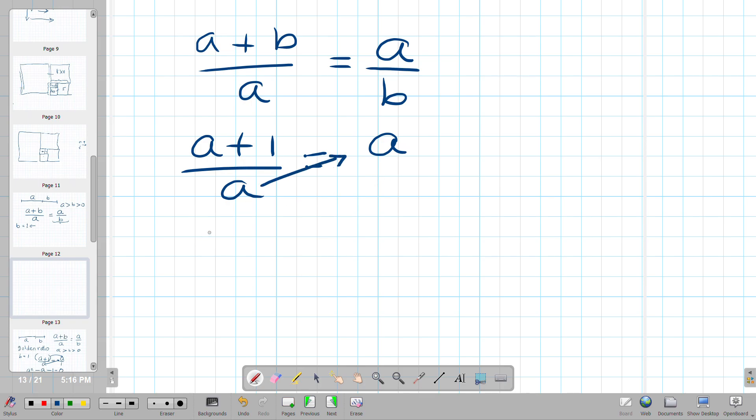Then move the A term over, and then move this over to get the equation A squared minus A minus one is equal to zero.